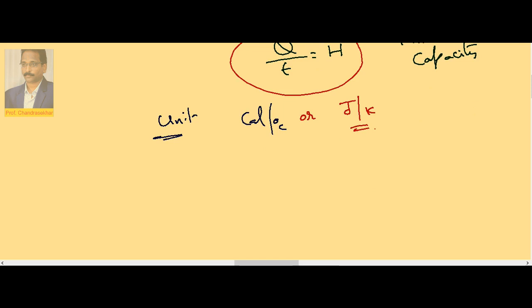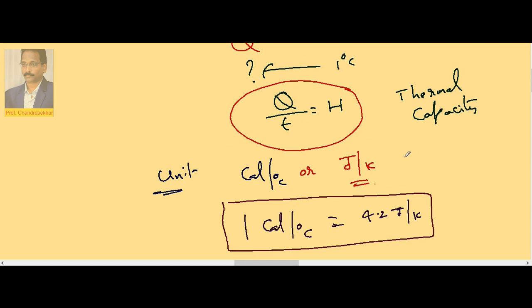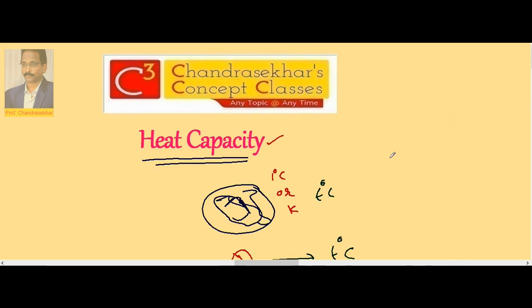What is the relation between these two units? 1 calorie per degree centigrade — we know that 1 calorie equals 4.2 Joule — so it is 4.2 Joule per Kelvin, because the difference in degree centigrade and Kelvin is the same. So 1 calorie per degree centigrade in CGS is equal to 4.2 Joule per Kelvin in SI. The amount of heat required to raise the temperature of the given substance through 1 degree centigrade is called heat capacity.